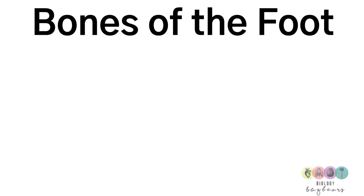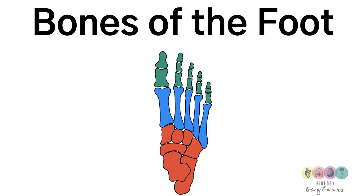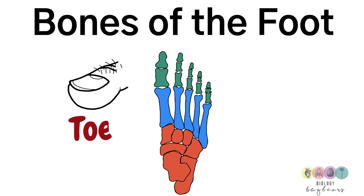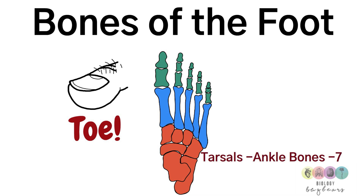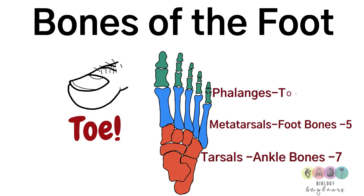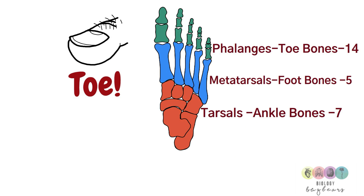You also need to know the bones of the foot. Think of 'T for toe': the bones in the ankle are the tarsals, and there are seven of those; then the bones in the sole of your foot are the metatarsals, and there are five; and the bones of the toes are known as the phalanges again, with 14 of those.